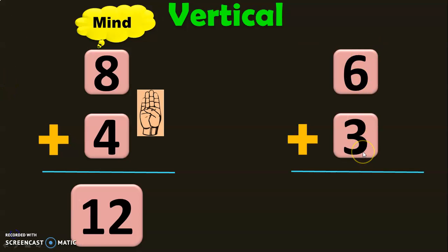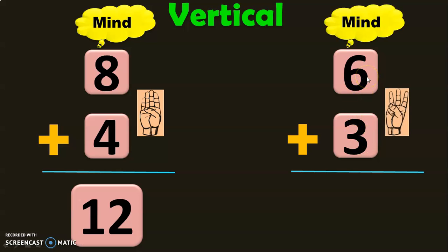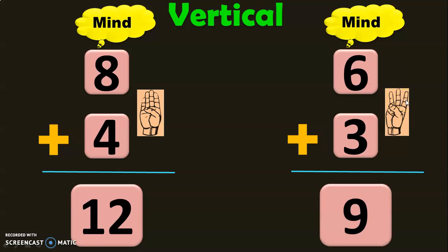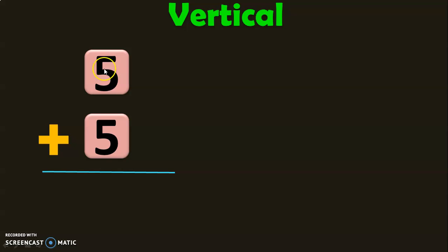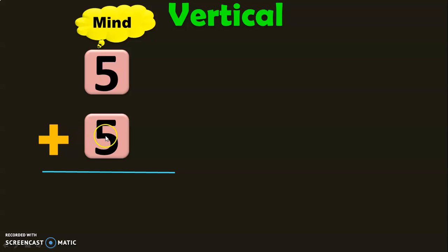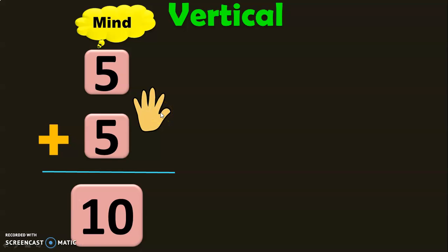Let us do the next sum: 6 plus 3. 6 in the mind and 3 in the fingers. After 6: 7, 8, 9. So the sum of 6 plus 3 is equal to 9. Let us do some more examples: 5 plus 5. 5 in your mind and 5 in the fingers. After 5: 6, 7, 8, 9, 10. So the sum of 5 plus 5 is equal to 10.